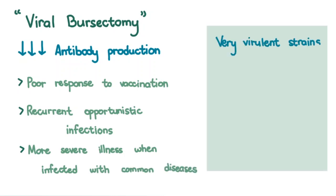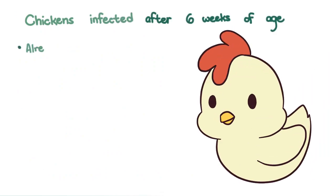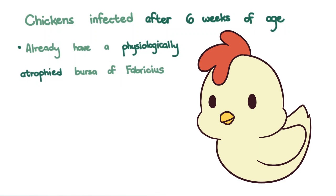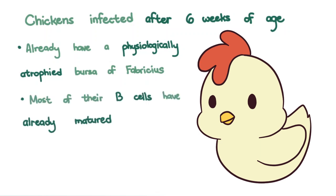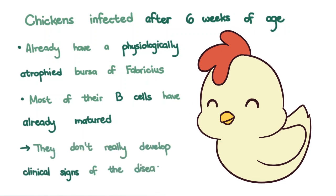Very virulent strains may also affect the thymus, spleen, and bone marrow. Chickens infected after six weeks of age already have a physiologically atrophied Bursa of Fabricius. This primary lymphoid organ atrophies with age, just like the thymus. And most of their B cells have already matured, so they don't really develop clinical signs of the disease.